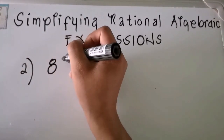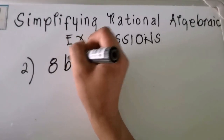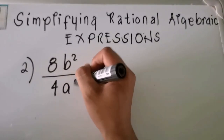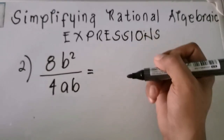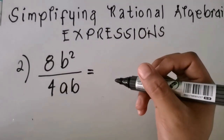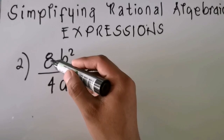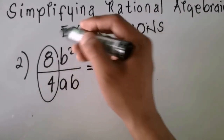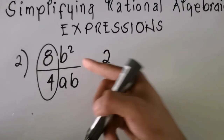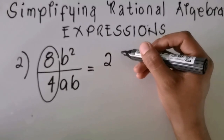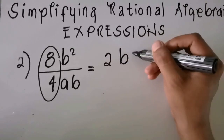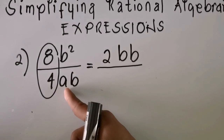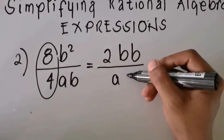Now for example number two, we have 8b squared over 4ab. Same as in number one, we divide 8 by 4, which gives us 2. Then we have b squared, which is b times b, in the numerator over a and b in the denominator.